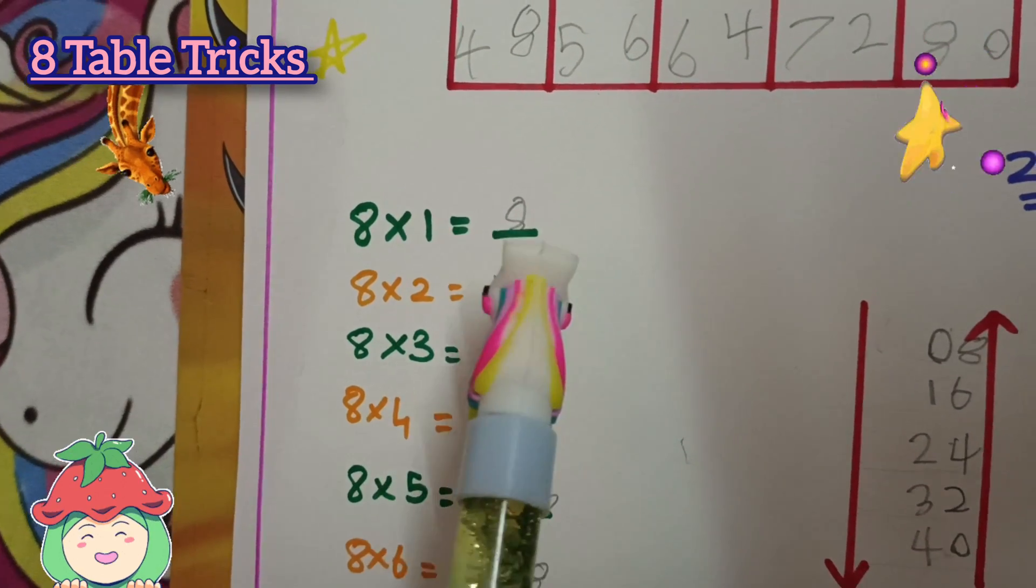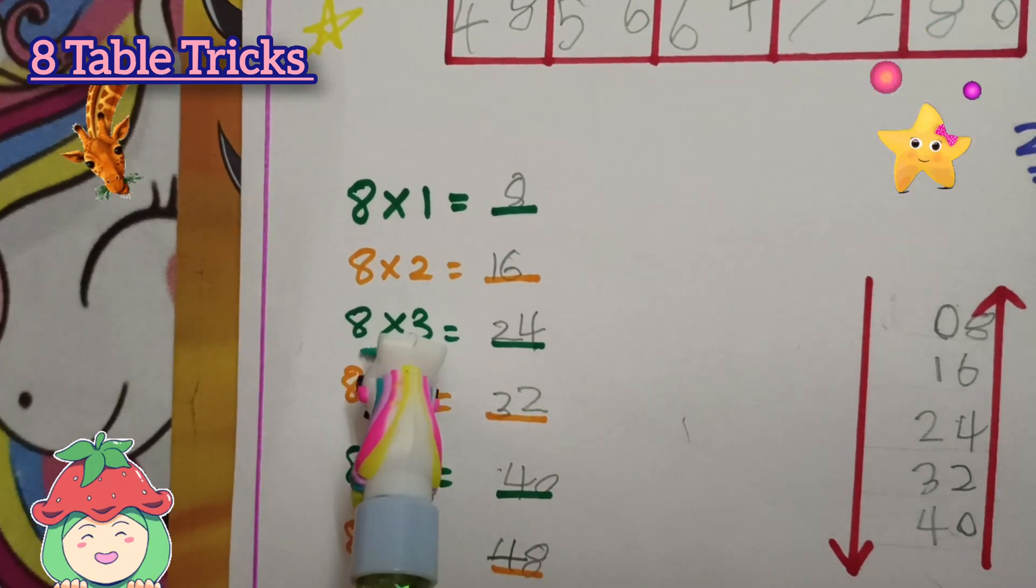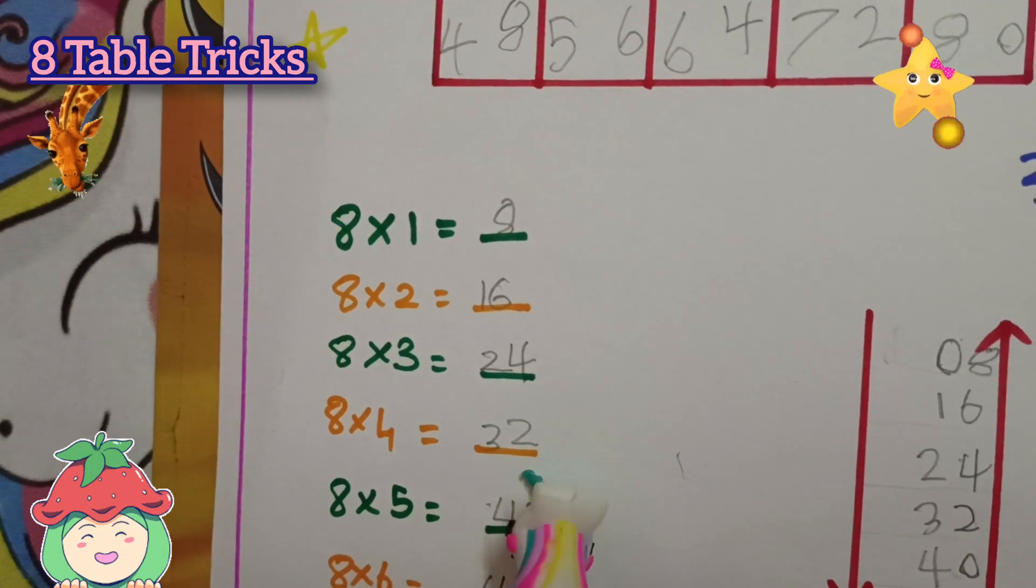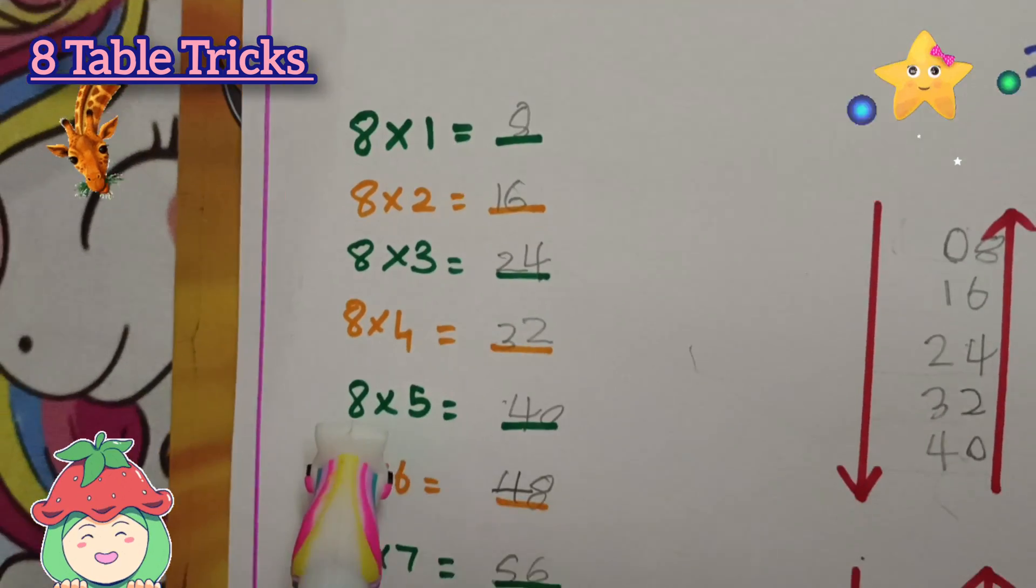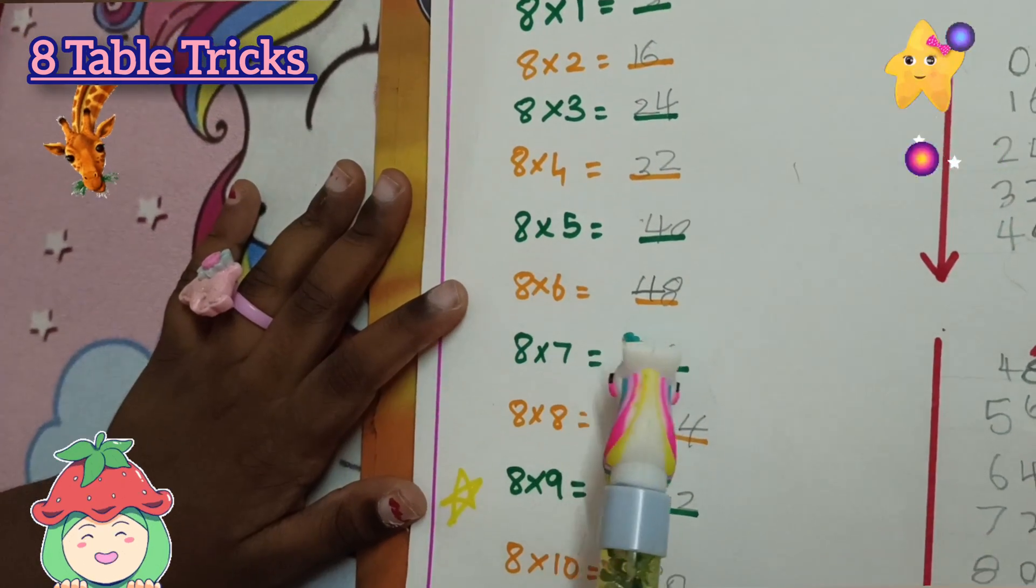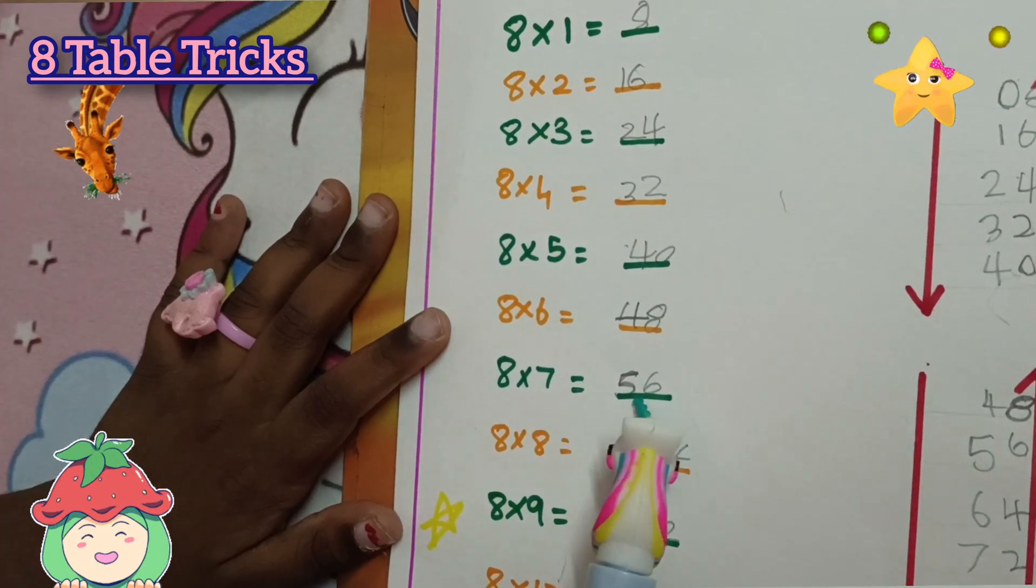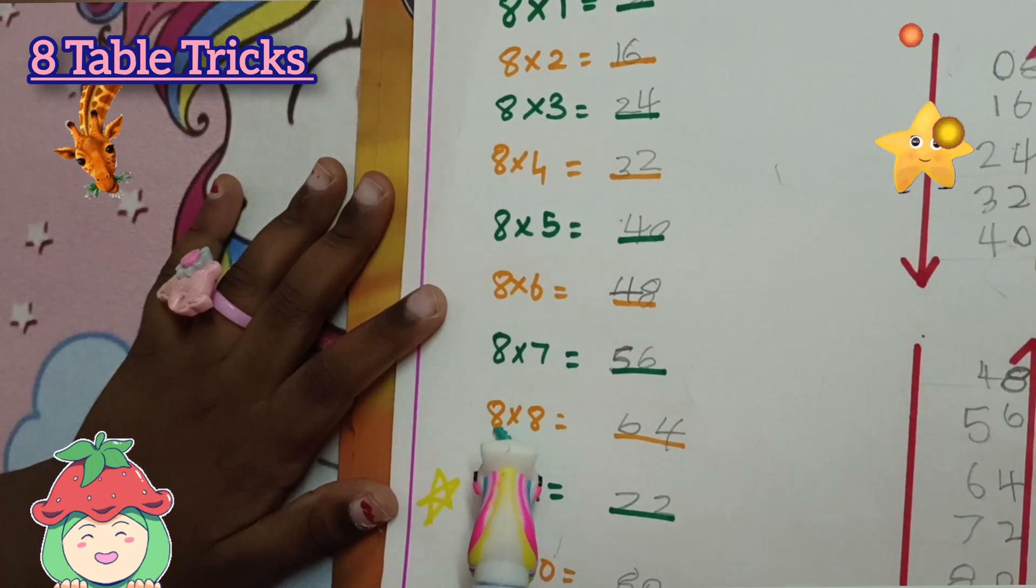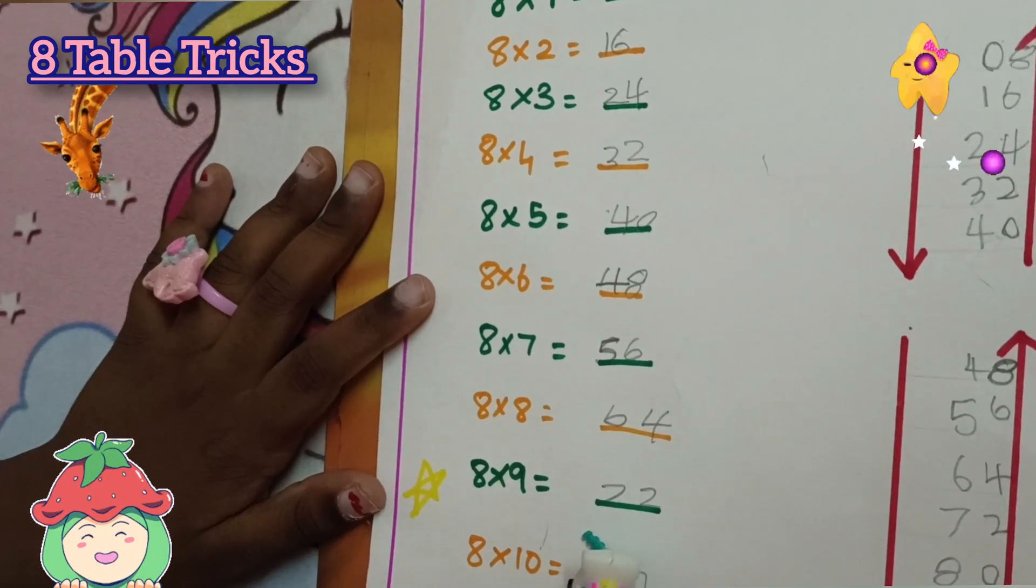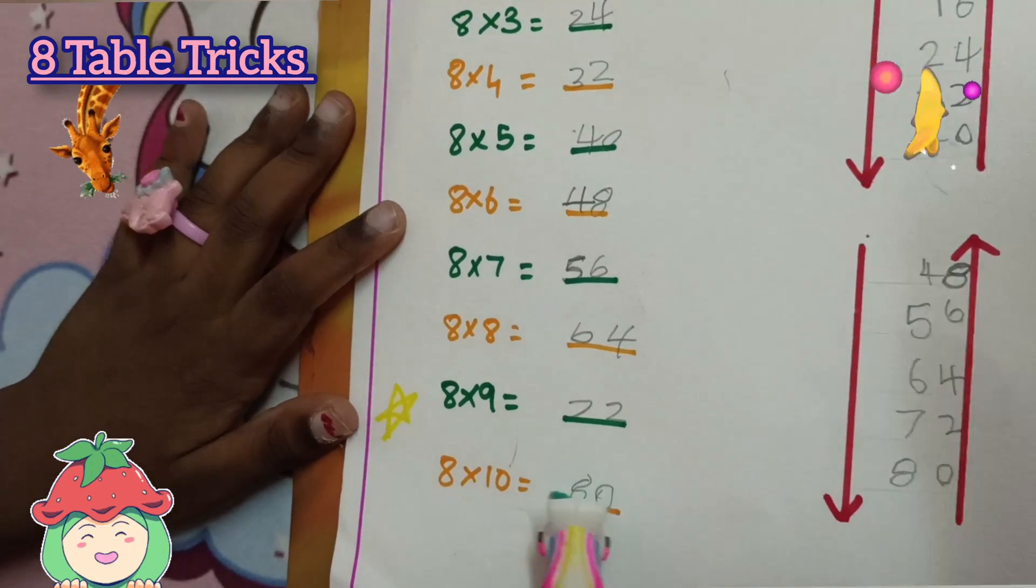Let's recite the full 8 times table: 8×5 is 40, 8×6 is 48, 8×7 is 56, 8×8 is 64, 8×9 is 72, 8×10 is 80.